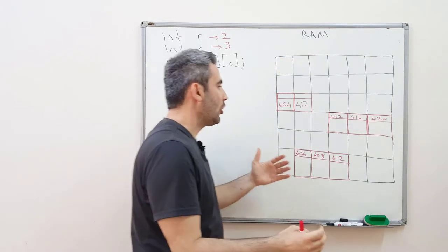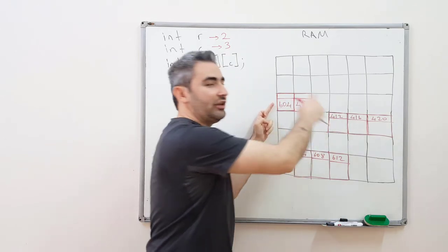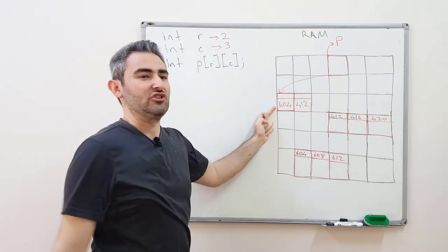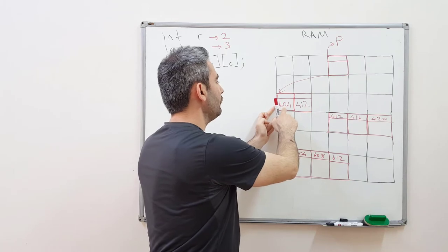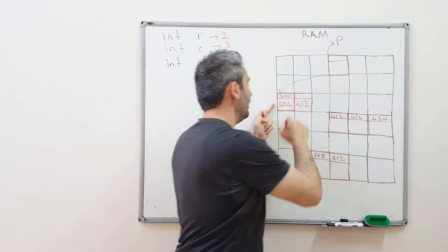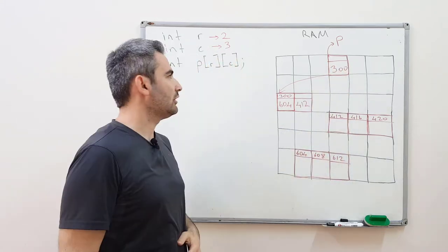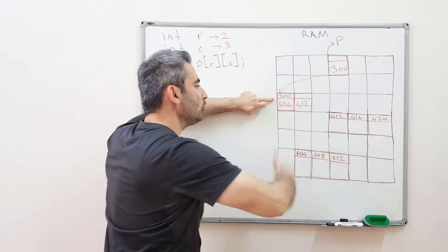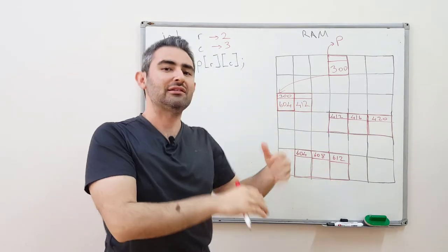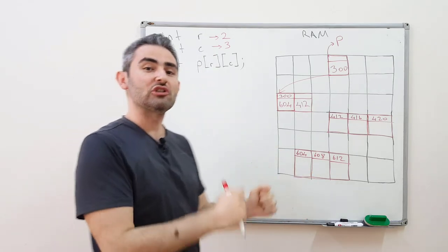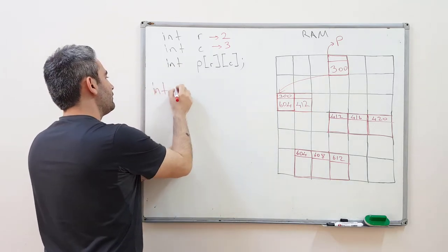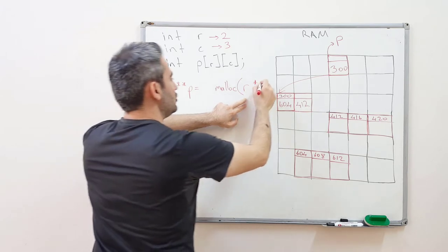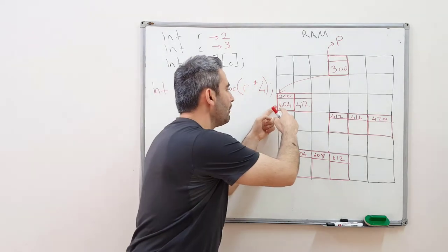All I need is a pointer array here, with the size of rows, where each pointer holds the starting location of each row — going one layer further. Before compilation, I don't know how many pointers will be in my array of pointers, so all I need is a single pointer p to this array of pointers. P will hold the starting location of that array, say 300. I'm actually creating a pointer to another pointer, where each pointer holds the starting location of a row.